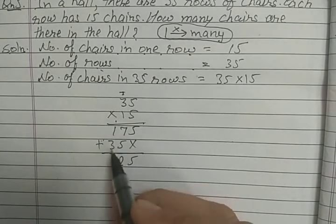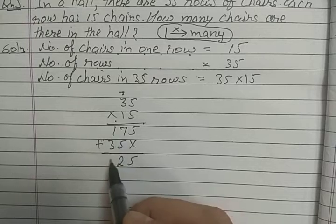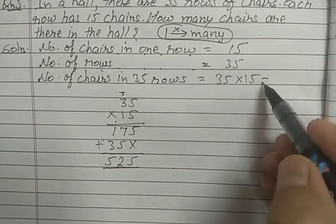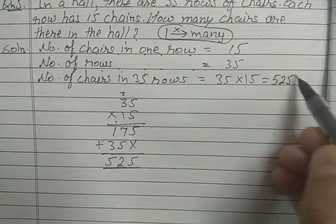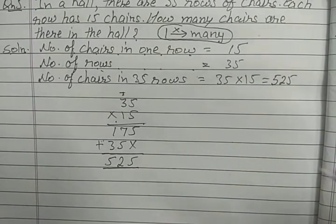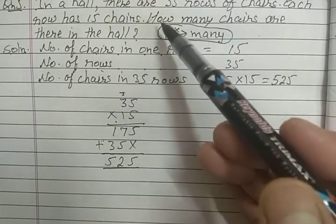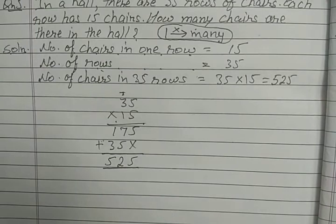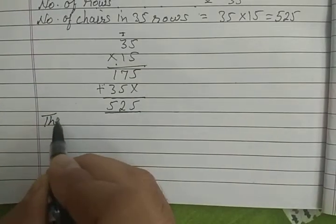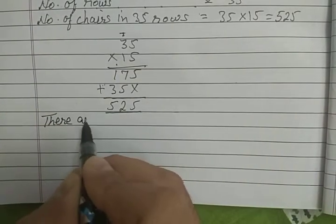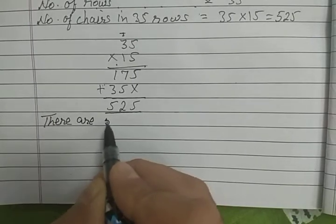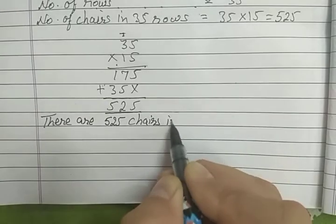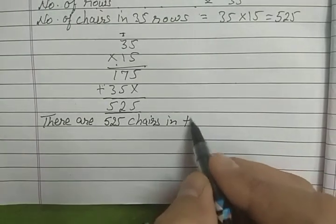Seven plus five is twelve, three plus one is four, four plus one is five. So 525 chairs are there in 35 rows. The question is how many chairs are there in the hall? So we write the answer: there are 525 chairs in the hall.